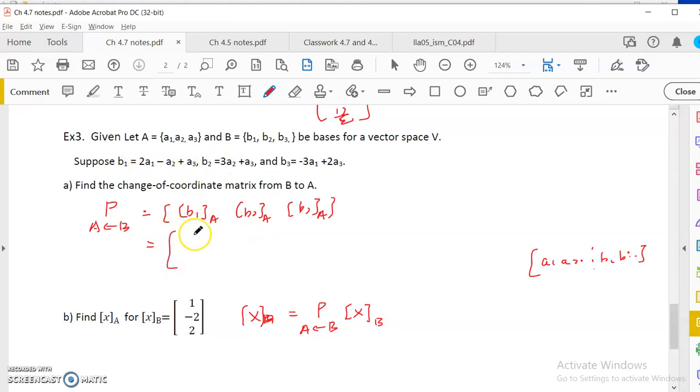So what we do is just write it out: 2, negative 1, 1, right? And then the second B2 is written in terms of A would be 3... no, there's no 3, so 0. There's no A1, so 0, 3, 1. The third would be, do I have A, yeah, it's negative 3, but there's no A2, so 0, 2.